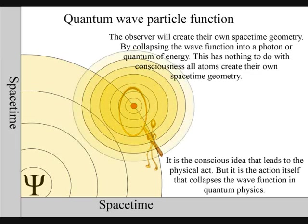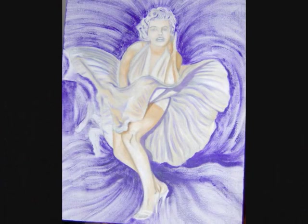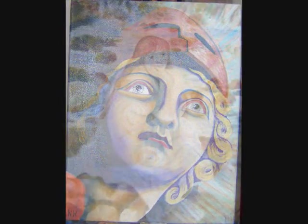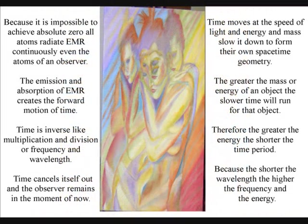The forward momentum of light is continuously creating a blank canvas for the observer, that she or he can participate in. This is what Socrates called a sea of beauty. To put this very simply, time moves at the speed of light, and energy and mass slow it down to form their own space-time geometry.